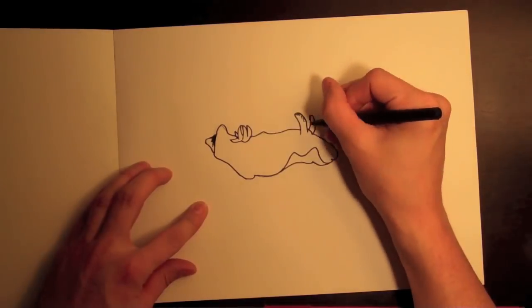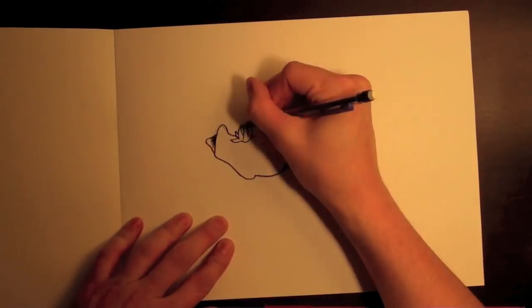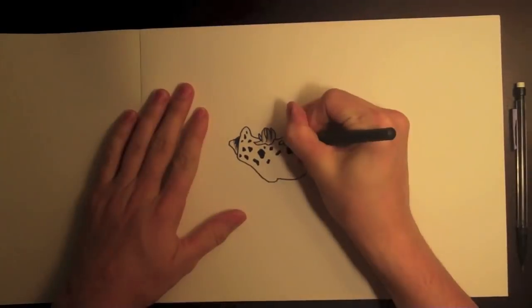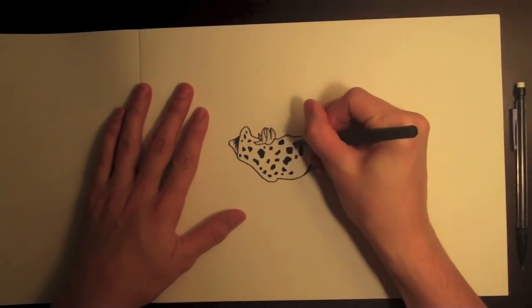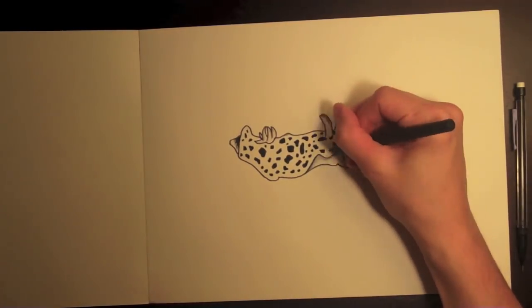Nudibranchs are a type of sea slug. Sea slugs, like terrestrial slugs, are snails without shells. Over the course of evolution, nudibranchs have shed these shells and developed really cool defense mechanisms to protect themselves from predators. But we'll get to that later.